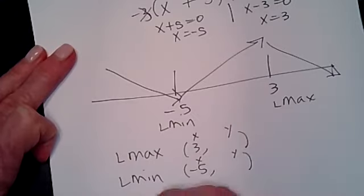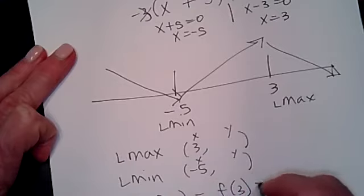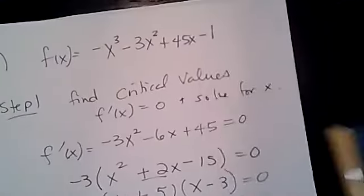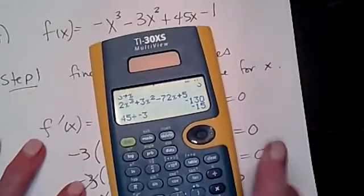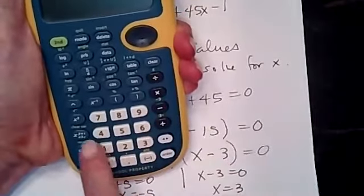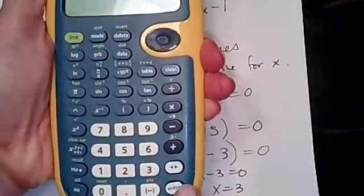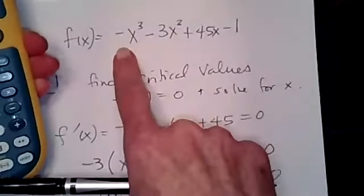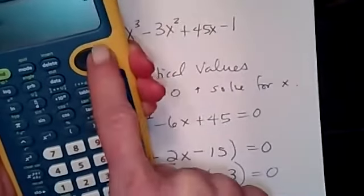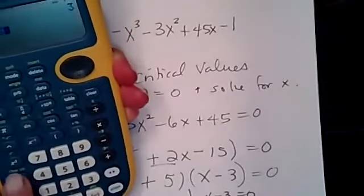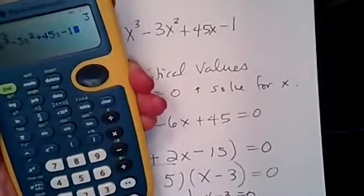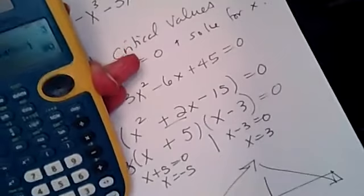To find y for the local max at x = 3, I plug into the original function: -x³ - 3x² + 45x - 1. I store 3 for x, type in the original function, push enter, and I get 80. So my local max is (3, 80).